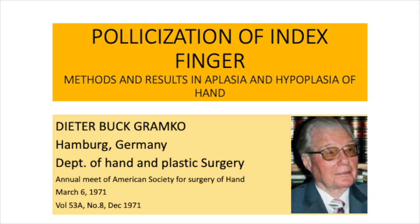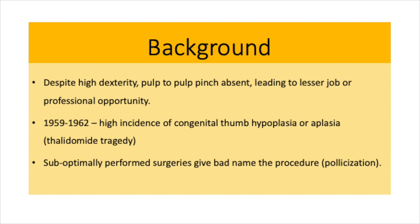This landmark article was read out by Dr. Buck-Gramcko in March 1971 at the annual meeting of the American Society for the Surgery of the Hand and was later published in December 1971. The background is that patients with hypoplastic or aplastic thumbs are quite dexterous, but pulp-to-pulp pinch is absent, which leads to lesser job and professional opportunities. The accepted method of managing these patients is pollicization, and in the years 1959 to 1962 there was a high incidence of congenital thumb aplasia or hypoplasia, probably due to the thalidomide tragedy.